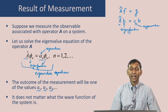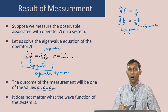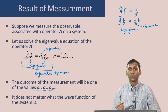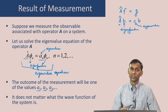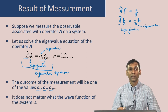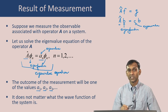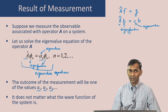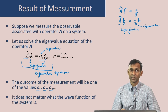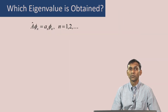Note that it does not matter what the wave function of the system is — it just depends on the operator. So if you are measuring the energy, the eigenvalues corresponding to energy are what you can measure, and this does not depend on what the wave function of the system is. But the wave function, as we have seen, contains all information about the system. In particular, it will tell us which eigenvalue is obtained when you make the measurement.